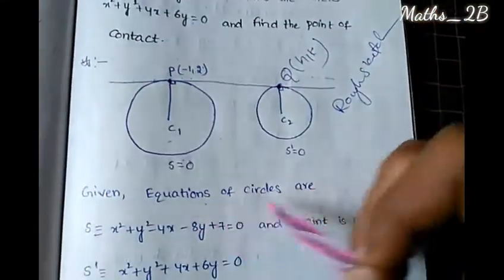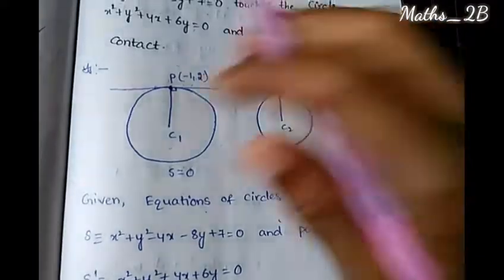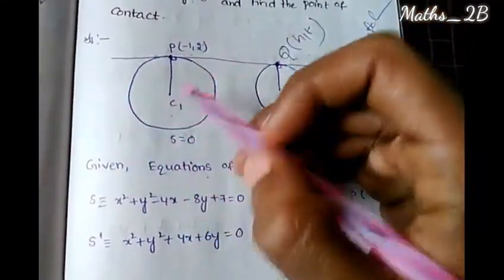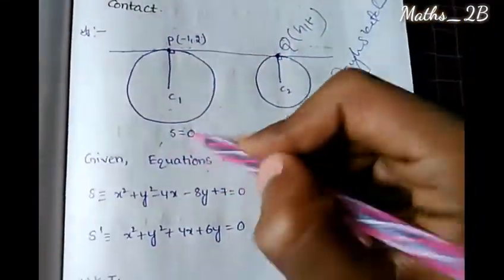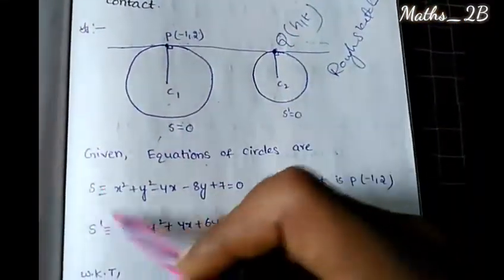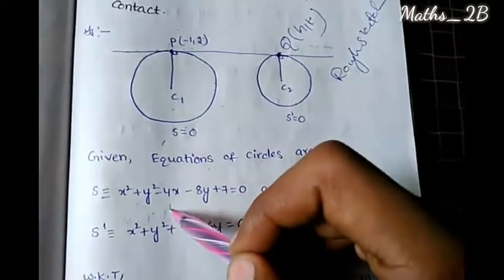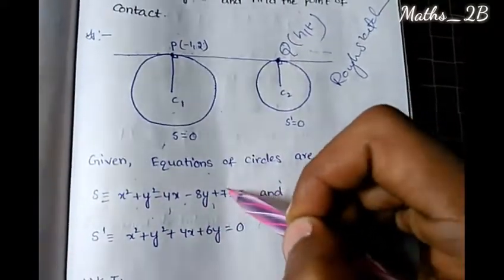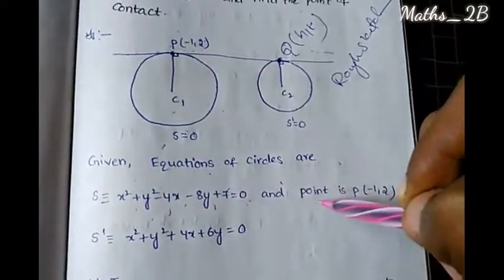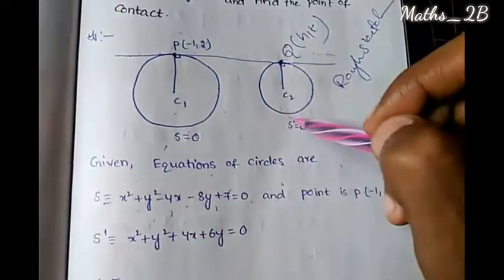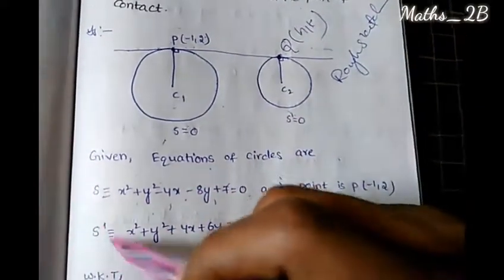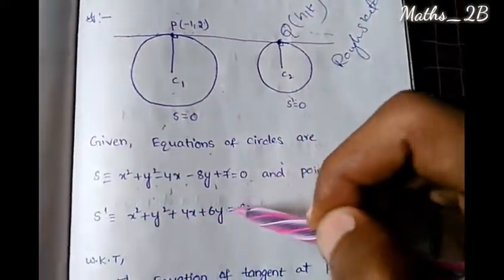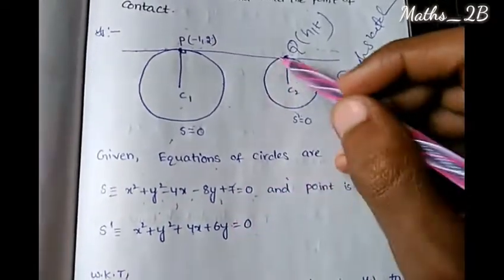Given equations of circles: S equals x squared plus y squared minus 4x minus 8y plus 7 equals 0, and S' equals x squared plus y squared plus 4x plus 6y equals 0.